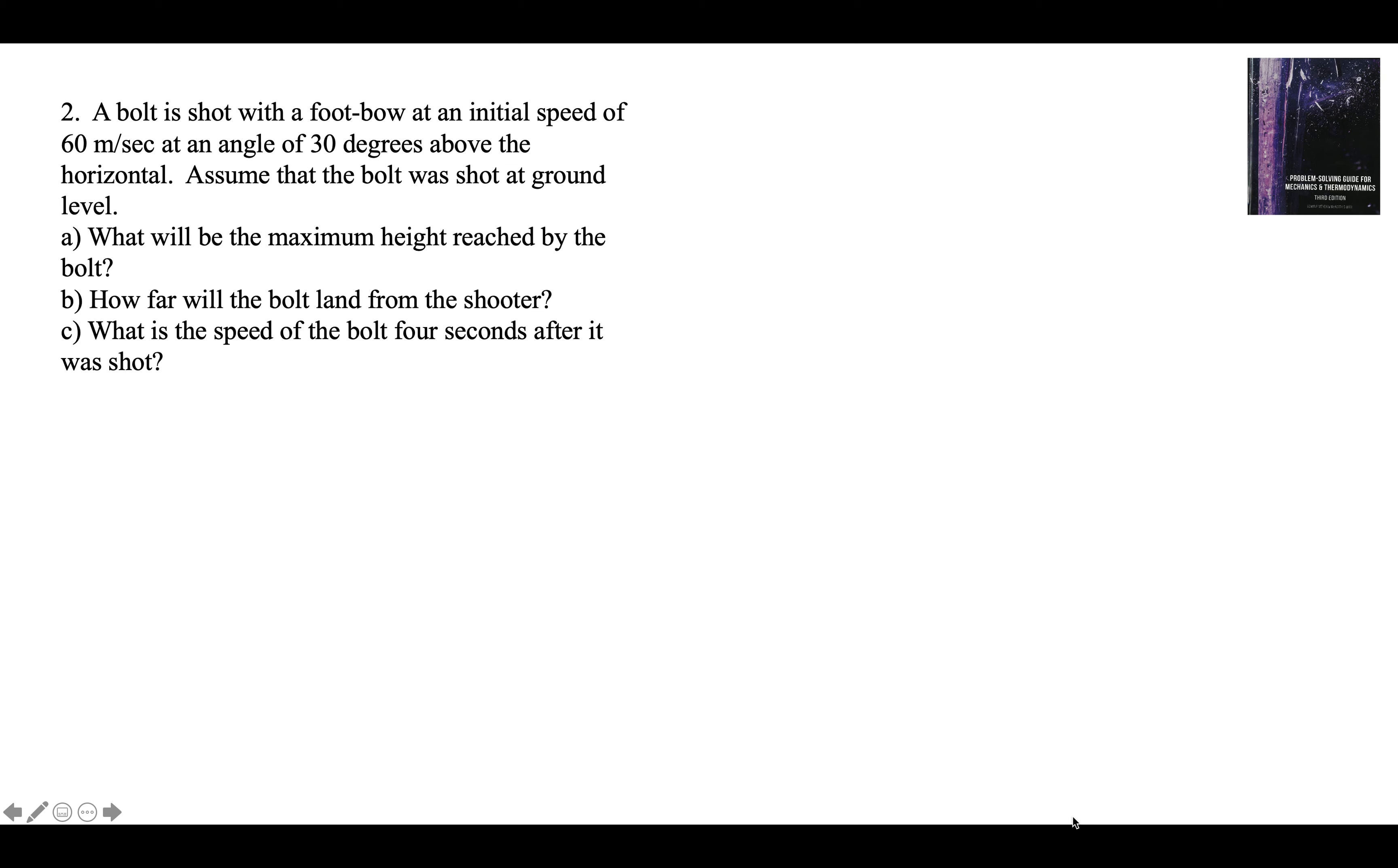A bolt is shot with a footbow at initial speed of 60 meters per second at an angle of 30 degrees above the horizontal. Assume that the bolt was shot at ground level. What is the maximum height reached by the bolt? How far will the bolt land from the shooter? What is the speed of the bolt four seconds after it was shot?